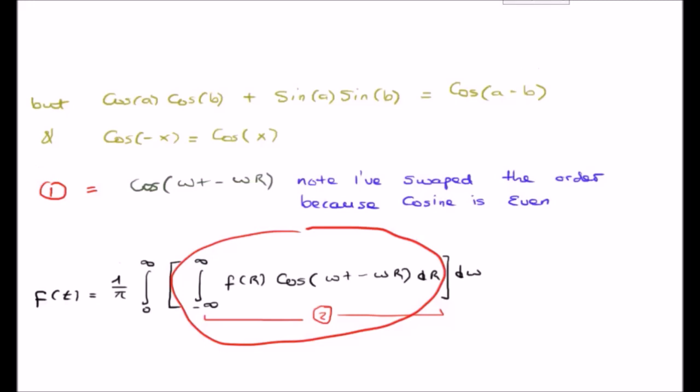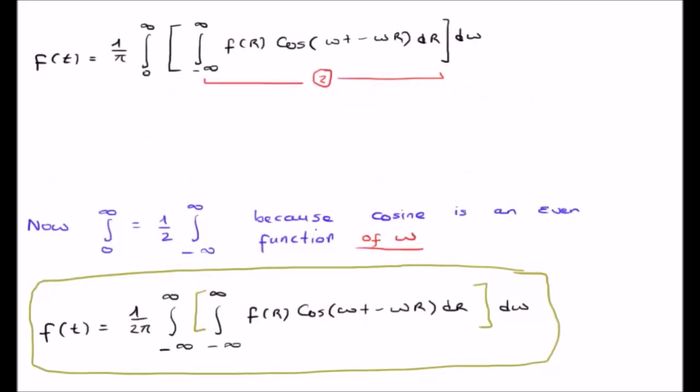The next thing we can notice is that cosine is an even function. In this case, we are integrating it with respect to omega. At the very least, this means that we can replace the zero to infinity integral by one half of the infinite integral.